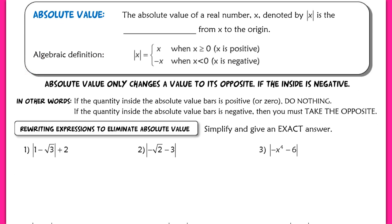The absolute value of a real number x is denoted as you should already be familiar with, and it is the distance from x to the origin. This is a very important concept — it relies on the fact that it's the distance from x to the origin.